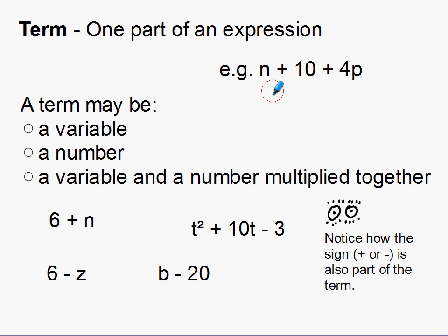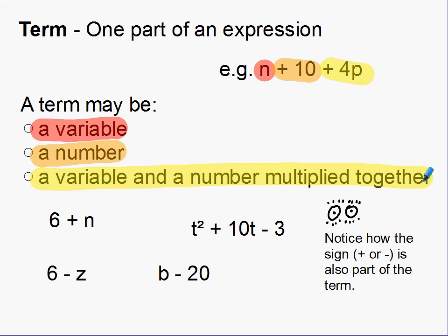For example, it could be just a variable sat there by itself, it could be a number, or it could be a variable and a number multiplied together. So here are examples of some terms. I will just probably put a little circle around. This is a term and that's another term in that expression.